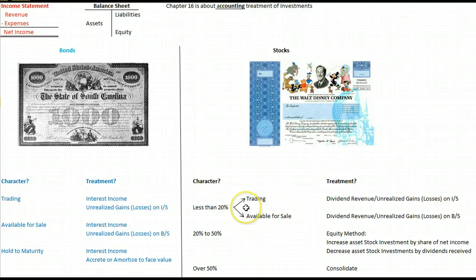On the other hand, if it's an available-for-sale stock, in other words we bought the stocks, we're not actively managing them, but we will sell them if we need the cash for some capital expenditure or to pay some bills, we'll book the dividend revenue just like up above: debit cash, credit dividend revenue.